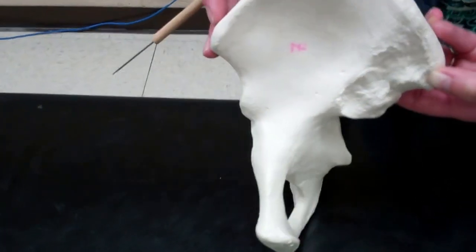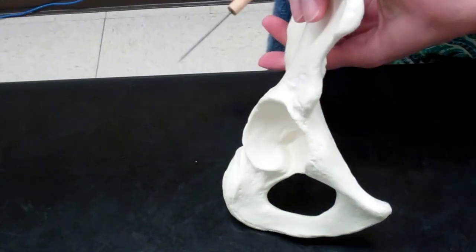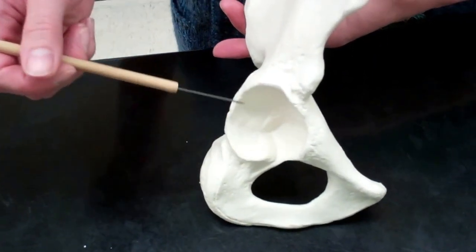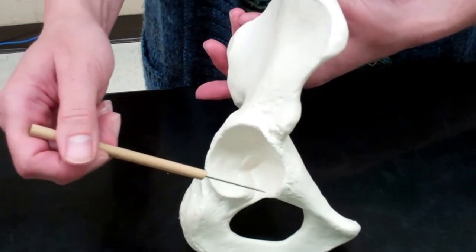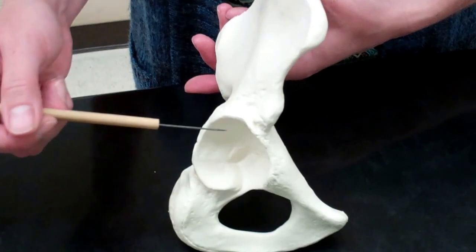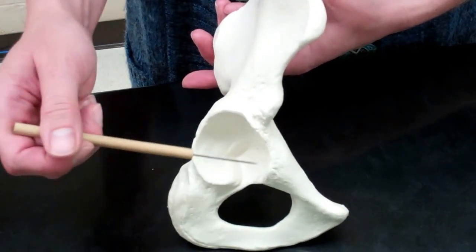If we turn to the lateral side, we can see a spot where all three of these bones come together. This is called the acetabulum. This is actually the spot where the femur, our leg bone, is going to hit the hip and articulate forming our leg joint.